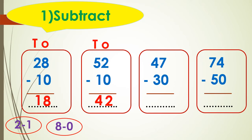The next question: 47 minus 30. First, write ones and tens and start subtracting by ones. We have 7 minus 0 — 7 minus 0 equals 7. Then look at the tens: we have 4 minus 3 — 4 minus 3 equals 1. So I write 1 in the tens place.